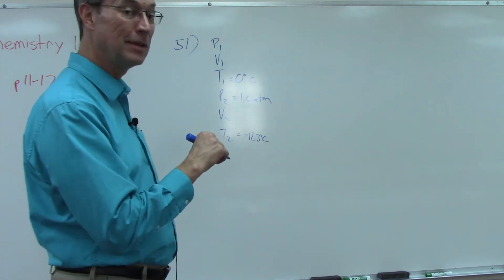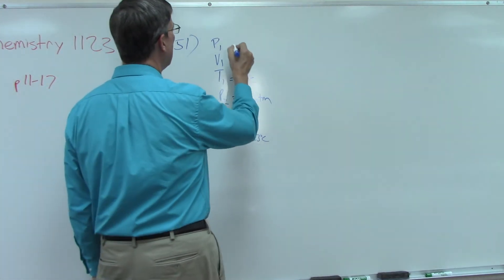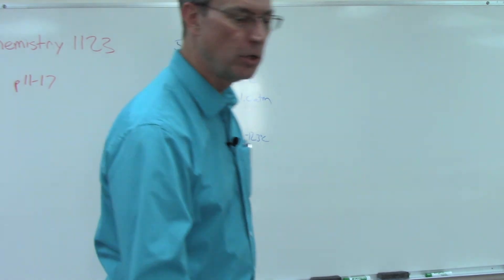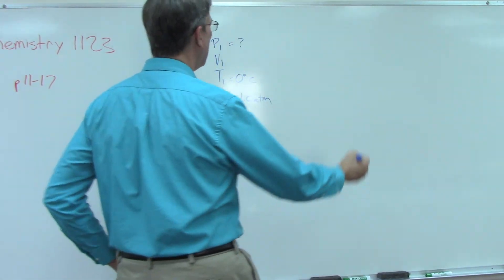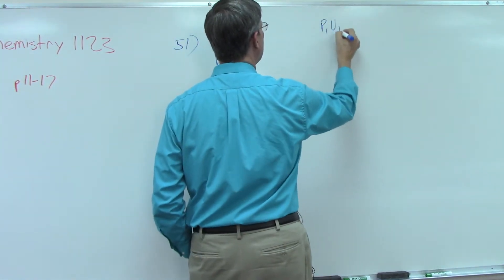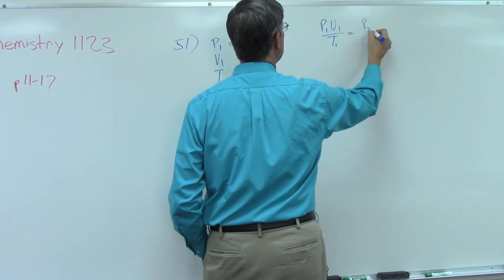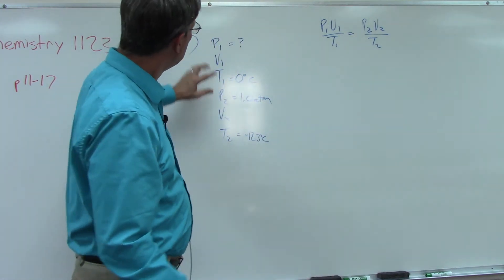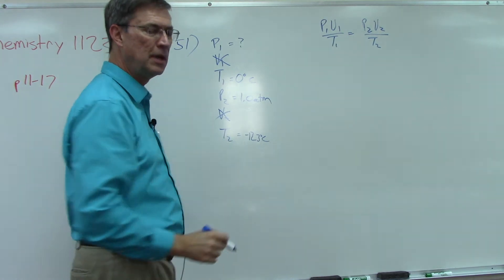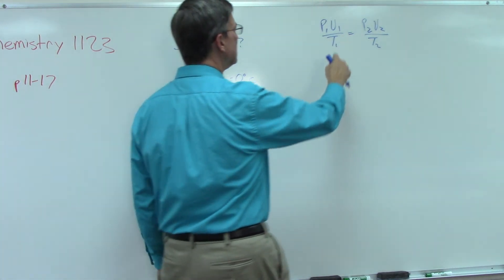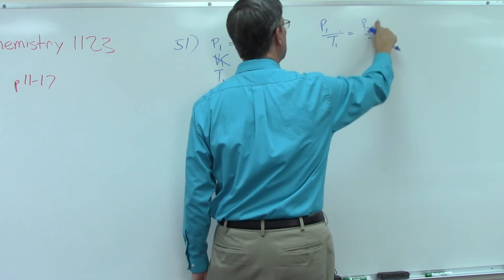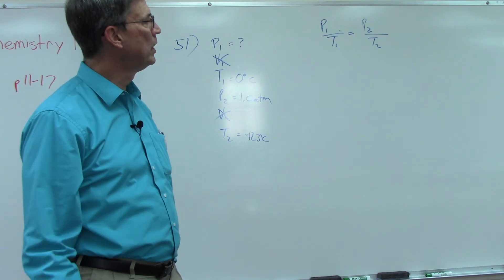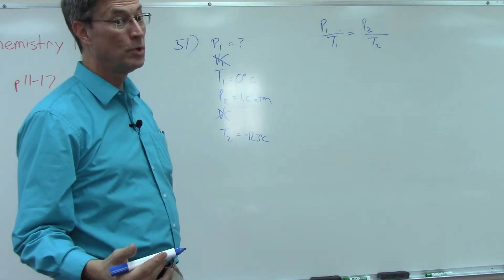So that tells us that we can take the volume out, and pressure one in this case is what we're actually solving for. It says what was the original pressure. Let's see if we can remember our formula: p1 v1 over t1 equals p2 v2 over t2. Now since the volume is not given and we're not asked to solve for it, we can just take that right out of our formula and just ignore it because it's being held constant. By the way, if we are holding the volume constant, do you remember which law that would be?